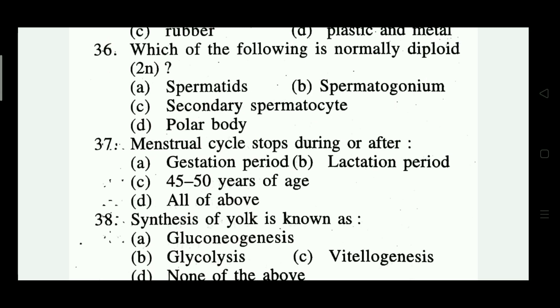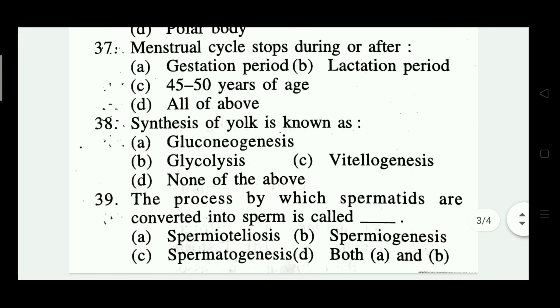Question number thirty-seven: menstrual cycle stops during or after — gestation period, lactation period, 45–50 years of age, all of the above. The answer is all of the above.